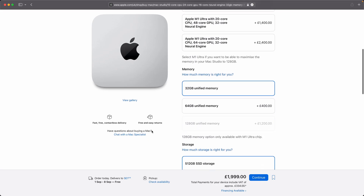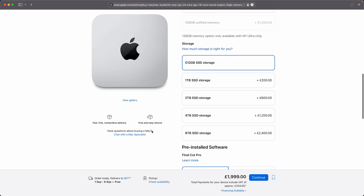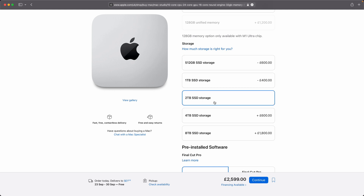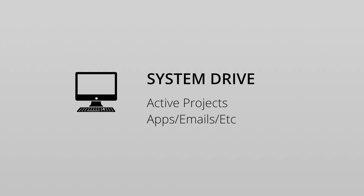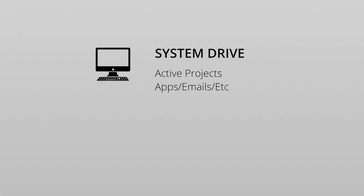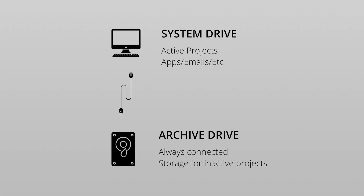This concept is based around the simple idea that you use your internal storage on the Mac — usually solid state and very fast — for your active projects. You want that internal drive to be big enough for any concurrent projects you're working on at any one time. Then you have a directly connected hard drive for archive storage — projects are moved there when complete and left there.